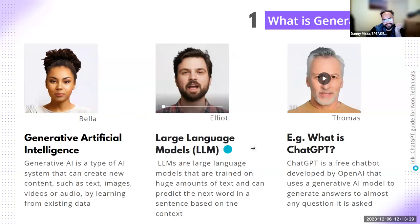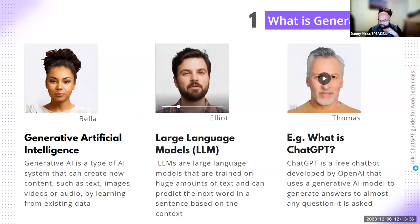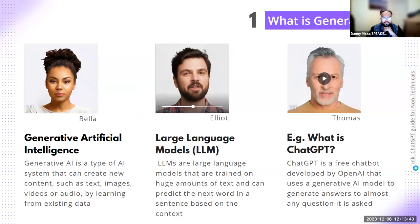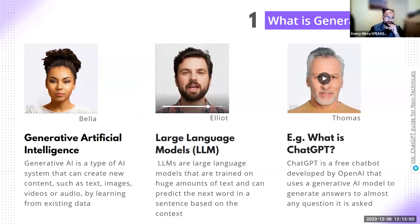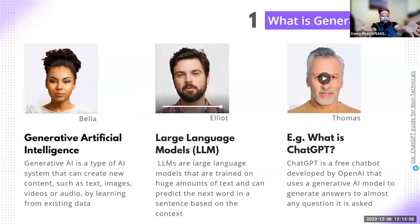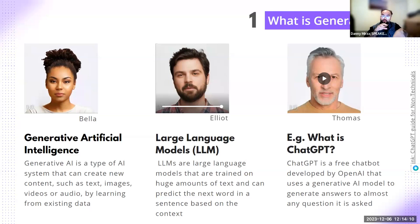LLMs are large language models that are trained on huge amounts of text and can predict the next word in a sentence based on the context. Imagine a Google that can talk and chat with you rather than giving you thousands of links. Large language models — ChatGPTs, Bing, Claude, Hugging Chat, Llama Chat — all of these AI-supported chats out there are large language models. You could chat to them; they have the world's knowledge and give you a very precise answer as compared to thousands of links from a Google search.